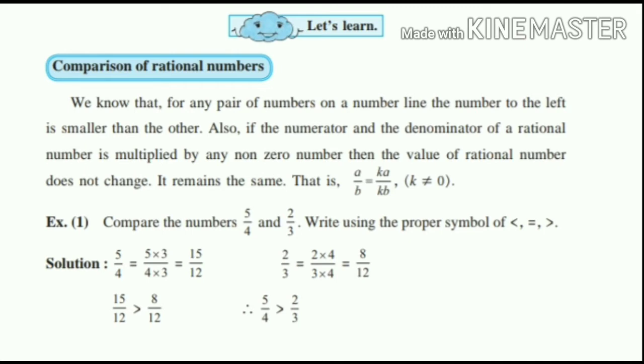Example number 1. Compare the numbers 5 by 4 and 2 by 3. Write the proper symbol: less than, equal to, greater than. Solution is 5 by 4 is equal to 5 into 3 and 4 into 3. That will be 15 by 12.